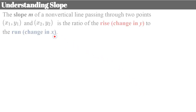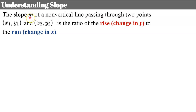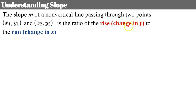Let's understand slope. The slope m — we use the variable m to represent slope — of a non-vertical line passing through two points. We use subscripts to name point one and point two. The slope m is the ratio of the rise, or the change in y, to the run, or the change in x.